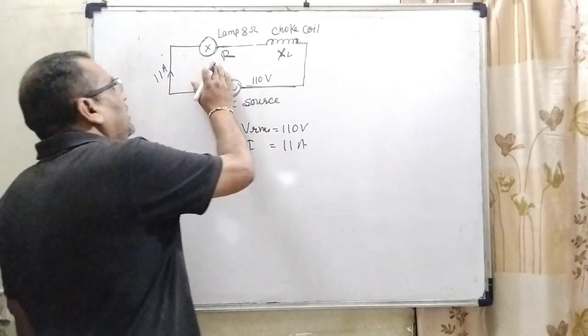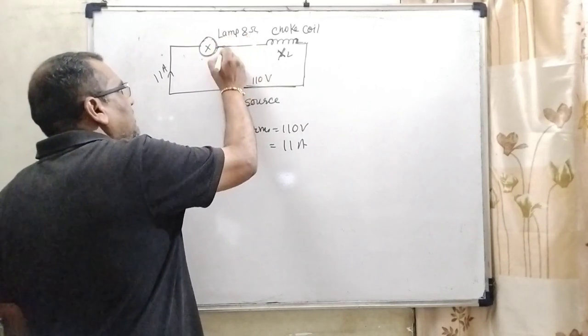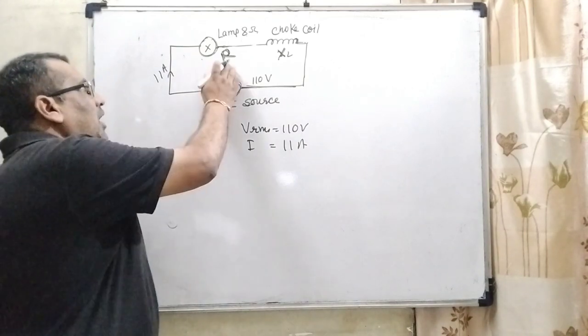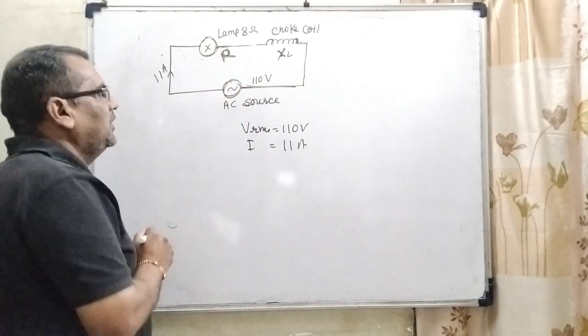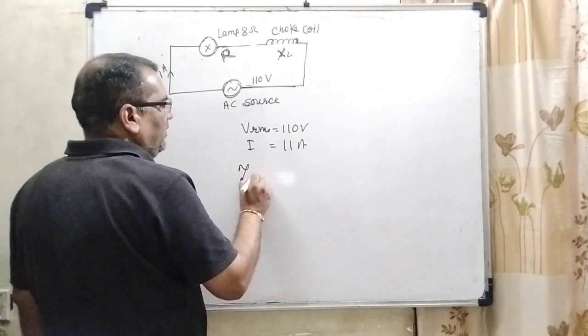As we know that here, the lamp resistance is given 8 ohm. It means here it's based on ohmic current. So, therefore, R is given that is 8 ohm. So, let us first find out the impedance. Okay. So, impedance, what is the formula of impedance?